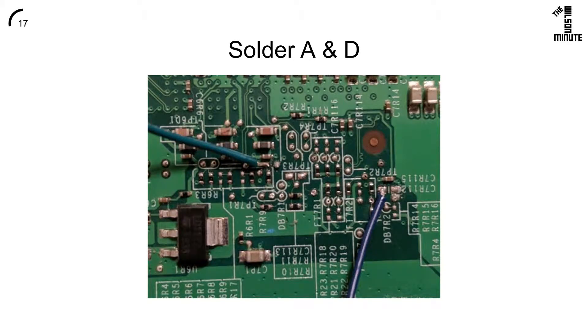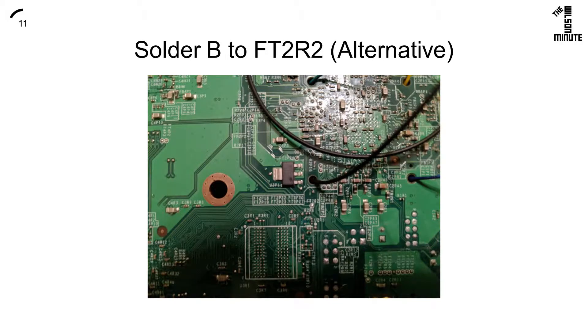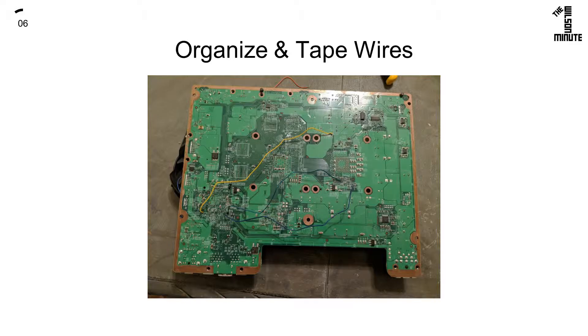Air replacement is far away so nothing is covered. This is the intended solder point for B, but if you are having trouble replace B with a longer wire. Run that wire to the back through the top right hole and solder it to FT2R2. Make sure the wires don't touch and tape them down.